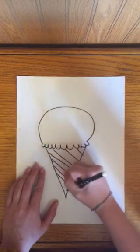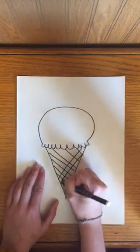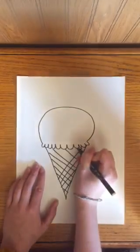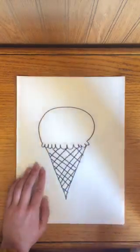They don't have to be perfect either and then I'm going to draw lines going the other way so it's like a crisscross pattern going across the cone one way going across the cone the other way. Just like that.